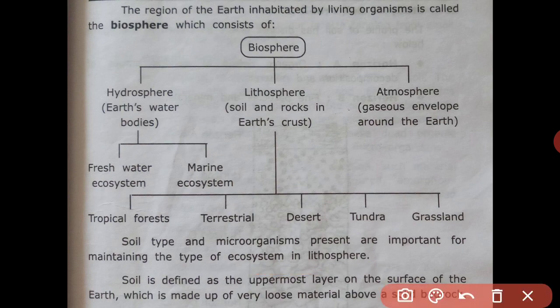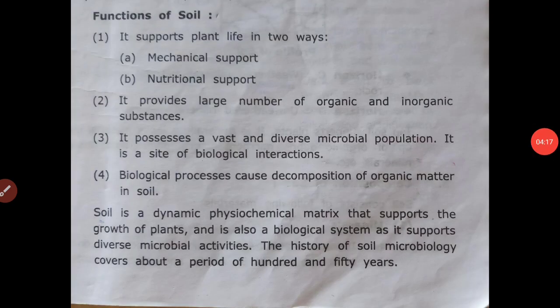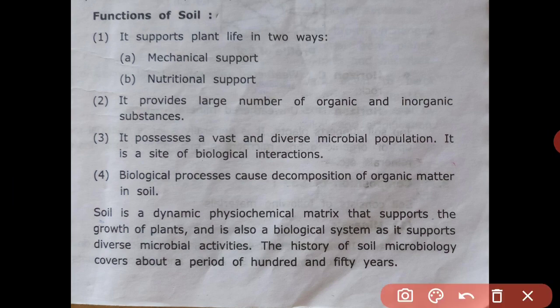Soil is defined as the uppermost layer on the surface of the earth, which is made up of very loose material above a solid bedrock. The function of soil is to support plant life in two ways: mechanical support and nutritional support.